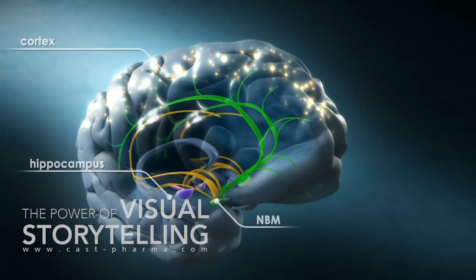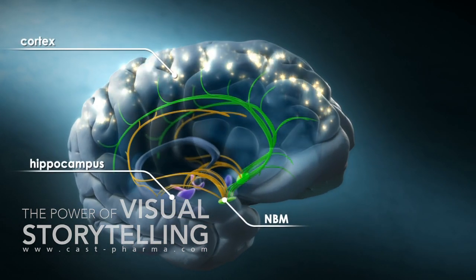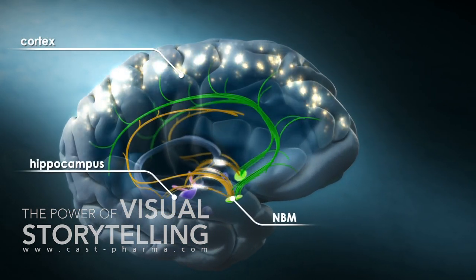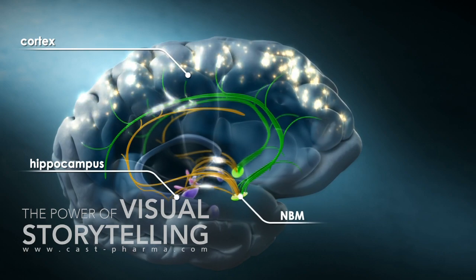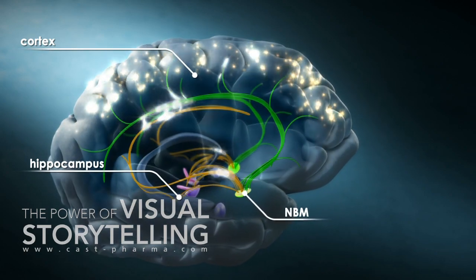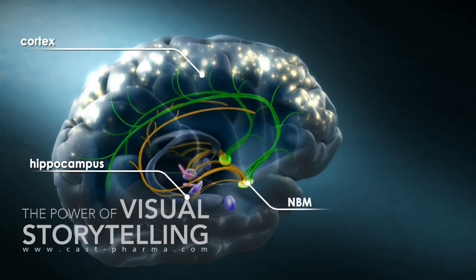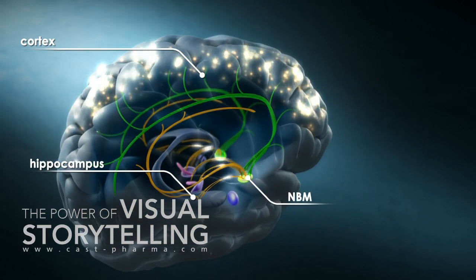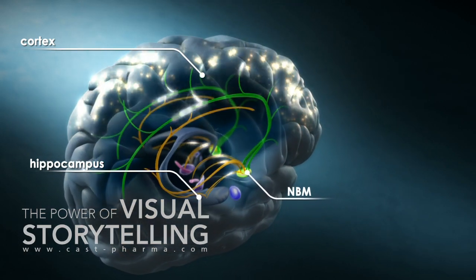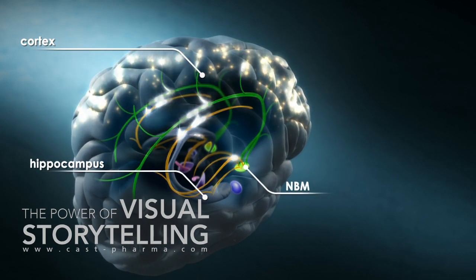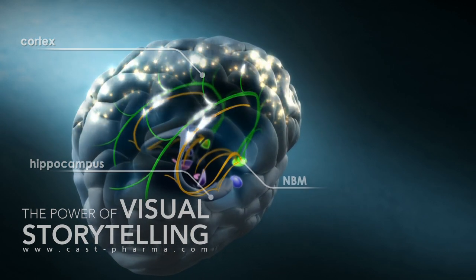Module 1 will show you the areas of the brain affected by Alzheimer disease and how different drugs, alone or in combination, can influence the signaling pathways involved in the progression of the disease.